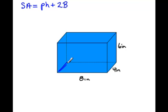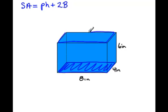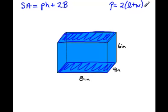Here are my two bases. The perimeter of a rectangle equals 2 times length plus width. Our formula is 2 times 8 plus 4, times the height, which is 6.